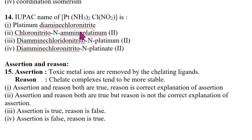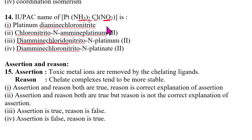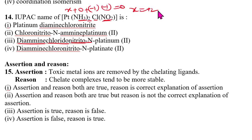Fourteenth question: IUPAC name of a given complex. It has diamine, chlorido, chlorido, and nitrito-N (NO₂ bound through nitrogen, written as nitrito-N). Oxidation state of platinum: x + 0 − 1 − 1 = 0, so x = +2. The answer is the third option.